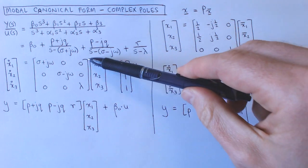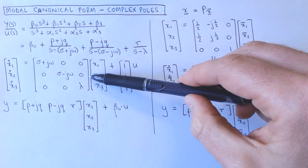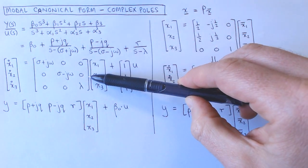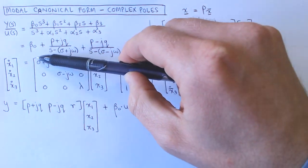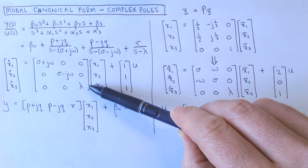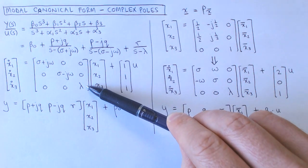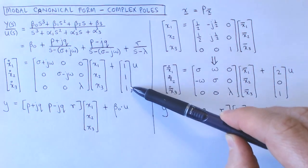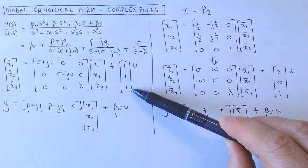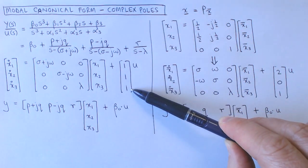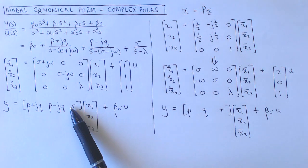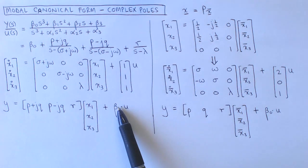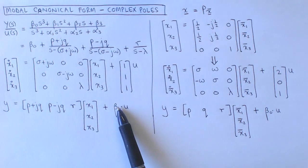Matrix A, or capital lambda, is a diagonal matrix with the poles on the diagonal. Vector B contains only ones, vector C contains the residuals, and scalar D is given by beta 0.